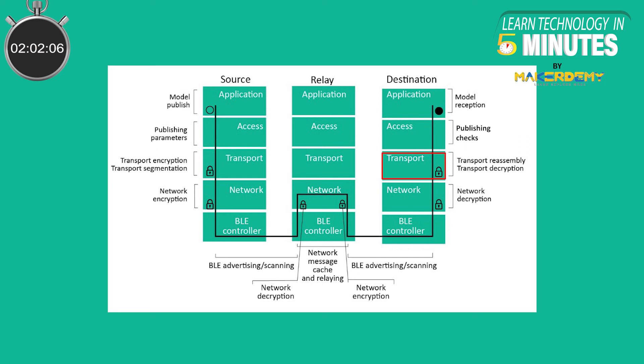Once all transport layer segments are received in this manner, the assembled message is decrypted with an application key and passed on to the access layer.